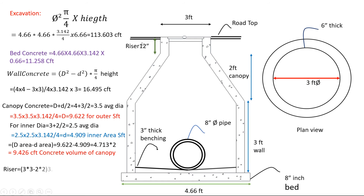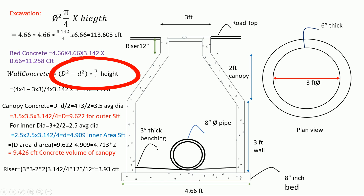Now we calculate the riser. We put the values in the same formula: outer diameter 3 feet squared minus inner diameter 2 feet squared, multiplied by 3.142 divided by 4, multiplied by 12 inches divided by 12.